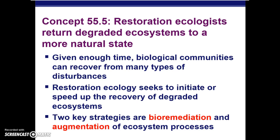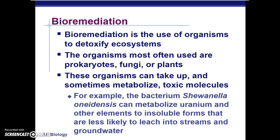Bioremediation uses organisms to basically detoxify an ecosystem. The organisms most often used are prokaryotes, fungi, or plants. For example, the bacteria Shewanella can metabolize uranium and other elements to an insoluble form that is less likely to leach into streams and groundwater, thus protecting the water cycle. That simple bacteria being introduced into a toxic ecosystem is one example of bioremediation — using a living organism to help clean things up. These organisms take up and sometimes metabolize the toxic molecules.